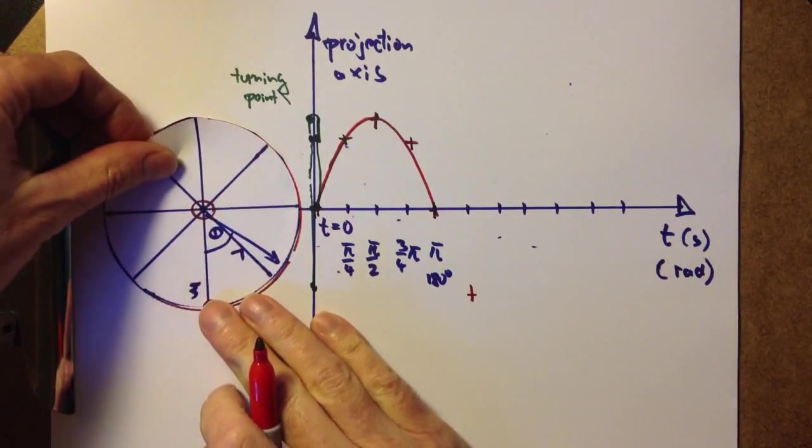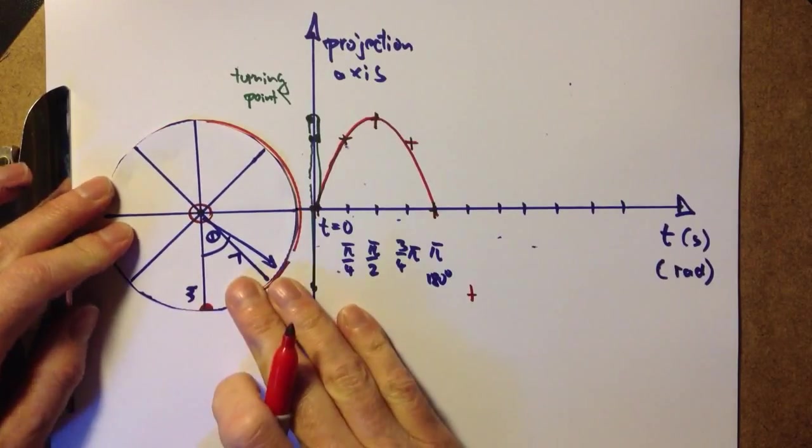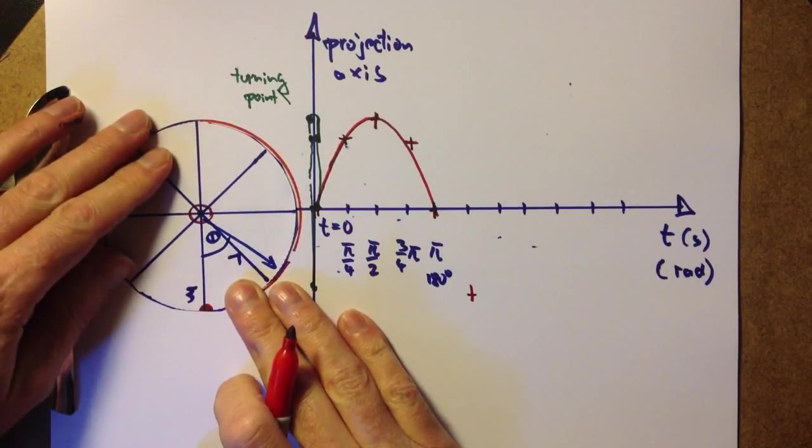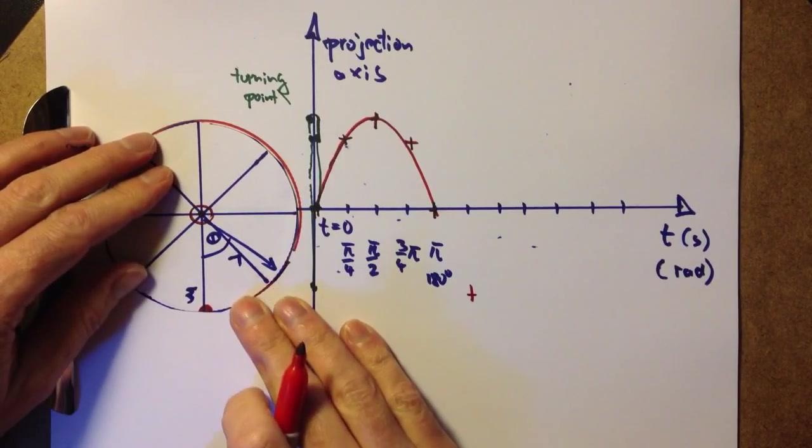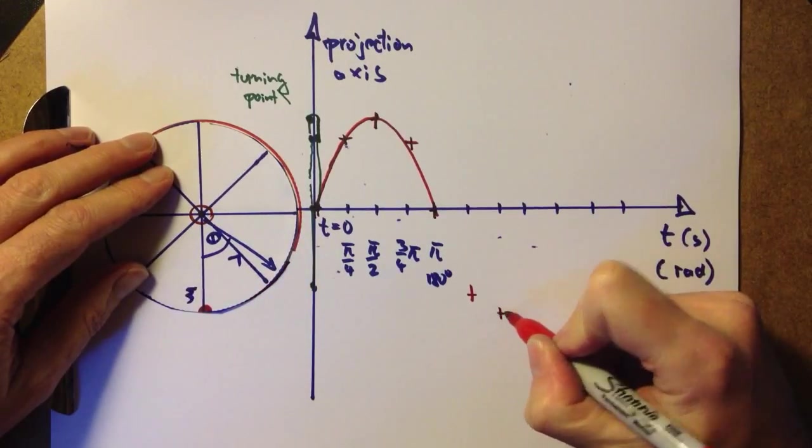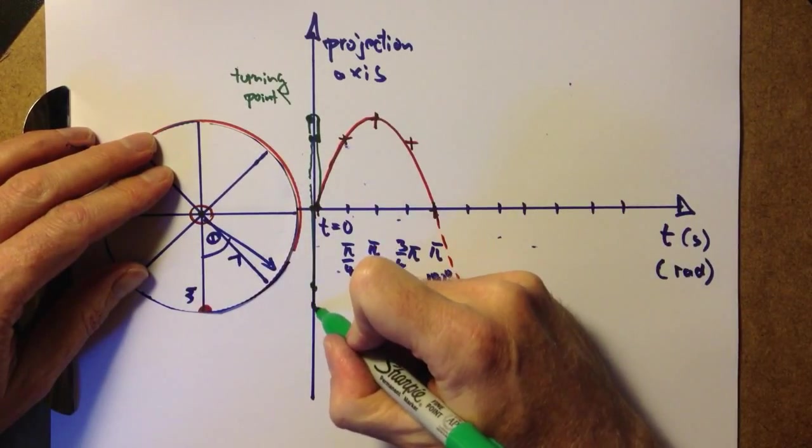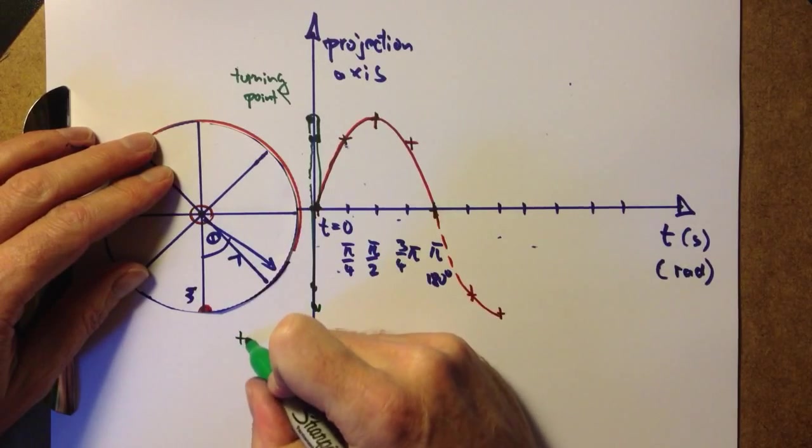Another 45 degrees. This is now 3.5 of π, or 270 degrees. And we are here. And our projection has moved a little bit further down and has another turning point.